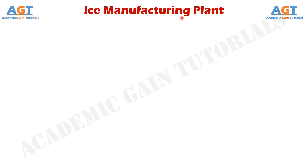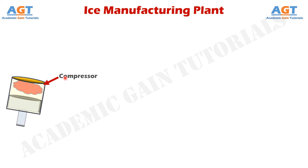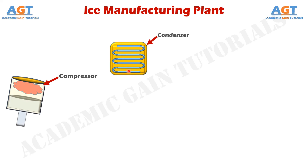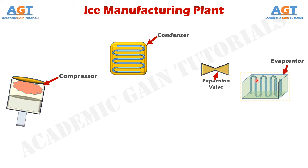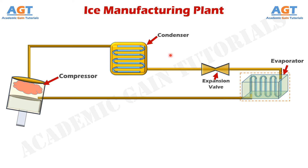The ice manufacturing plant works under the vapor compression refrigeration system, so it will have the four basic components that every vapor compression refrigeration system has. First of all, here we have a compressor, then we have a condenser, a throttle valve, and finally an evaporator. These four basic components are already inside an ice manufacturing plant. But to work as an ice plant, an extension is added.